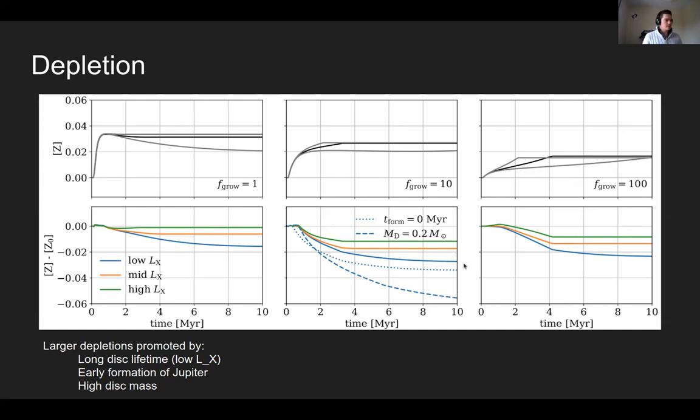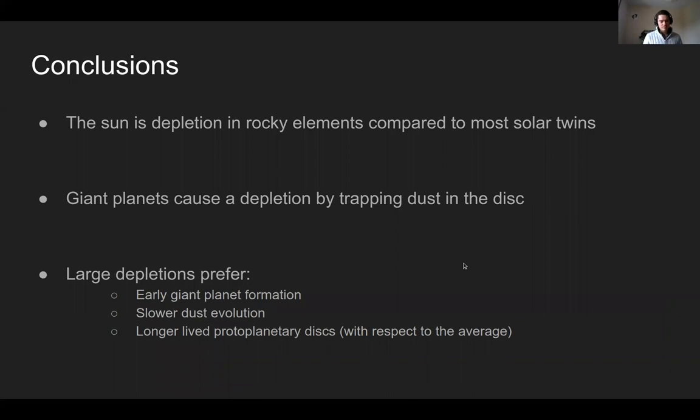So leaving it there and putting up my conclusions, we say that we think that essentially the formation of transition disks in protoplanetary disks is the origin of the Sun's depletion of refractory or dust forming elements compared to the average solar twin.